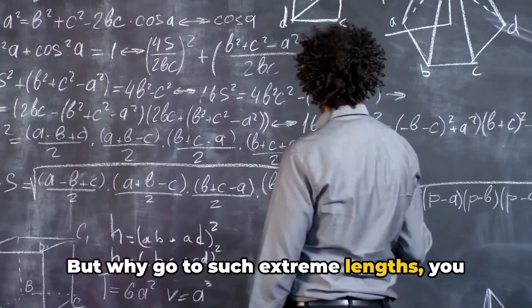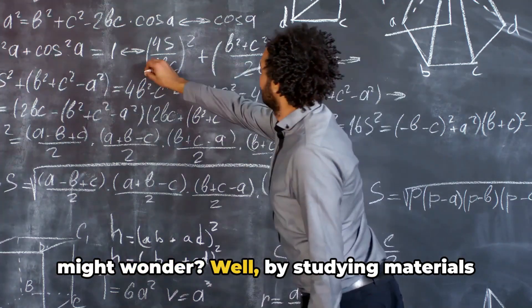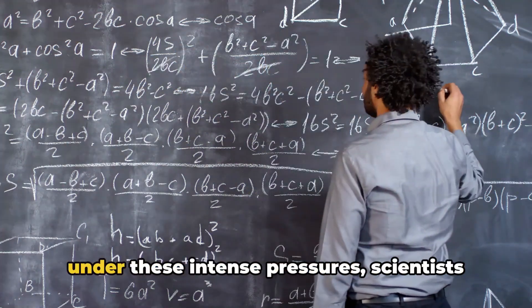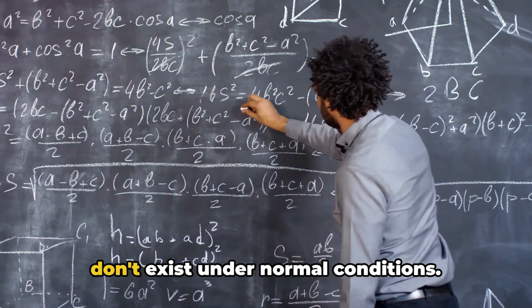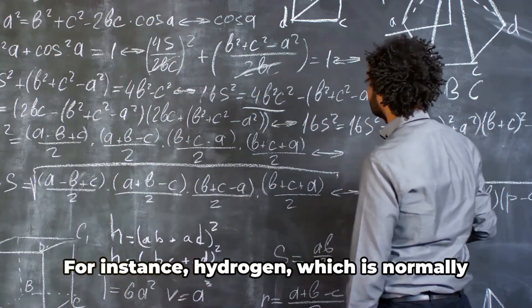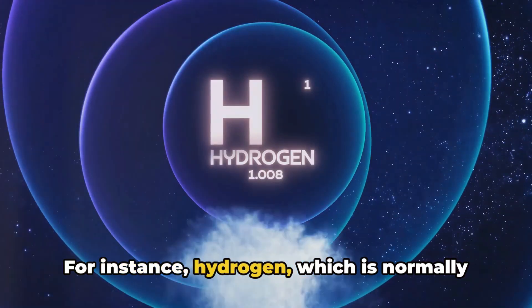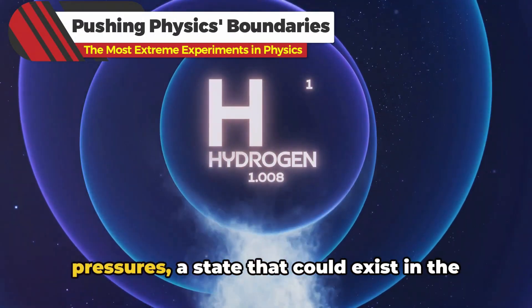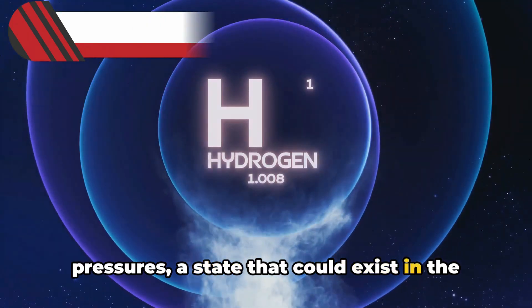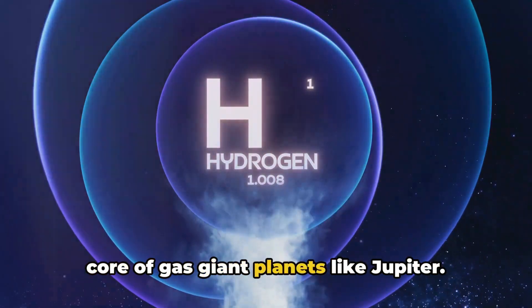But why go to such extreme lengths? By studying materials under these intense pressures, scientists can discover new forms of matter that don't exist under normal conditions. For instance, hydrogen, which is normally a gas, can turn into a metal under extreme pressures, a state that could exist in the core of gas giant planets like Jupiter.